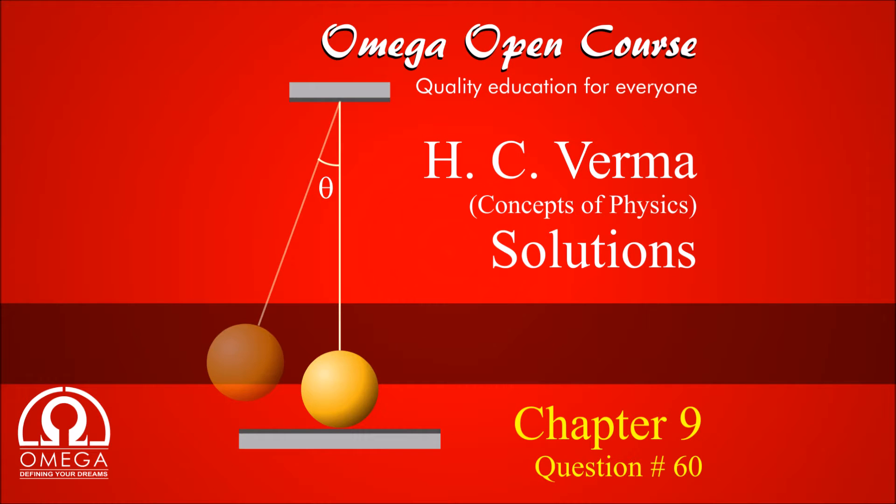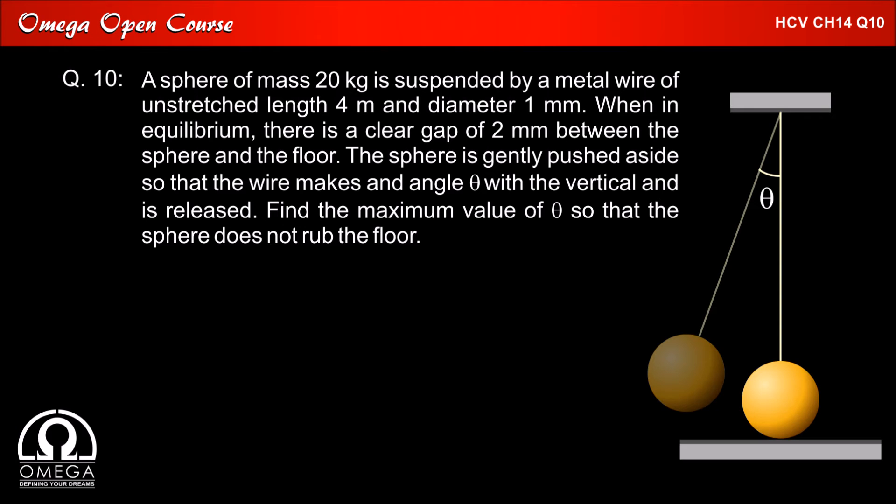H.C. Verma Chapter 9 Question 60. A sphere of mass 20 kg is suspended by a metal wire of unstressed length 4 m and diameter 1 mm.